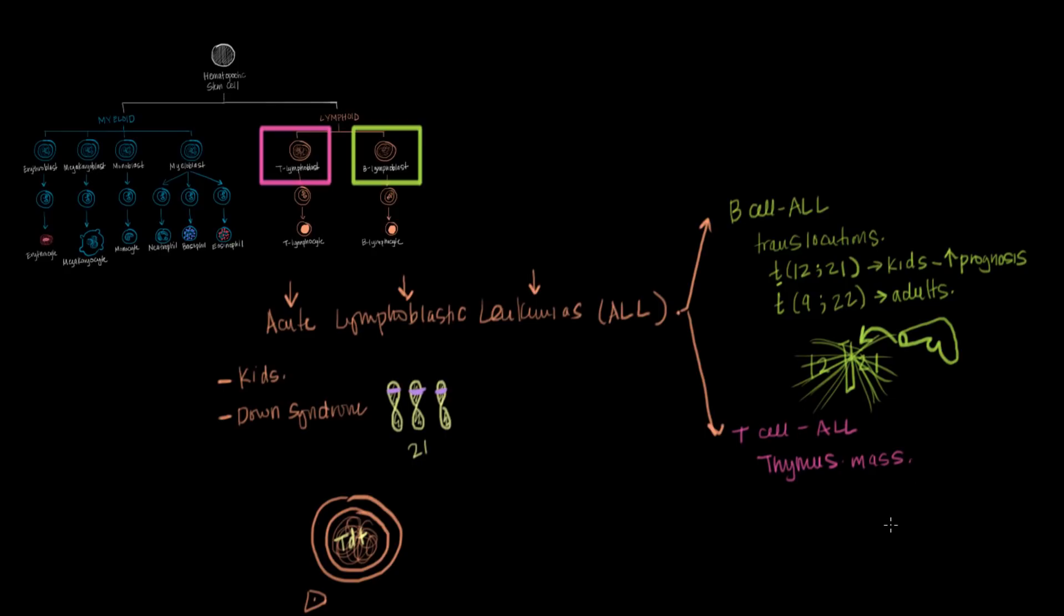And that's a problem because if your thymus is growing larger, it can compress the structures around it. So it can compress the airway and it can compress the esophagus. And that'll lead to a whole slew of symptoms on its own. So you can get a thymic mass. And the other thing that's important is that T-cell ALLs are most often seen in teenagers. And something that might help you remember these three things is remembering the letter T. So T-cell ALLs associated with thymic mass and found in teenagers.